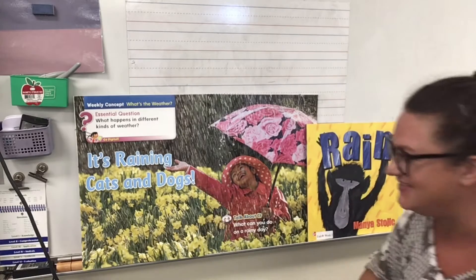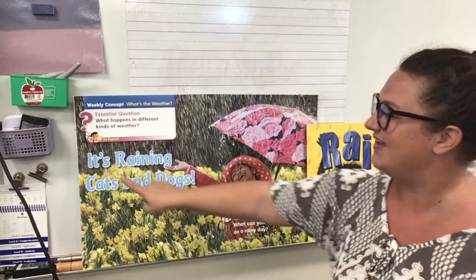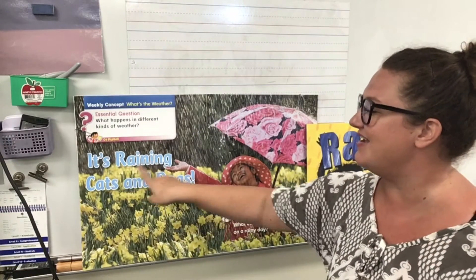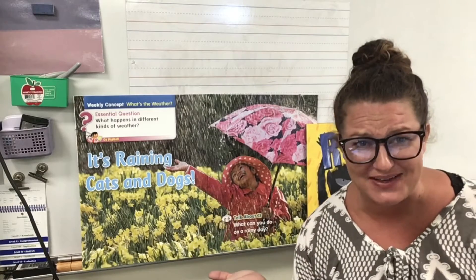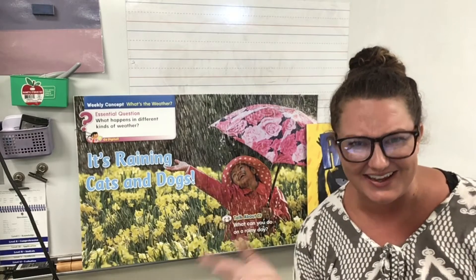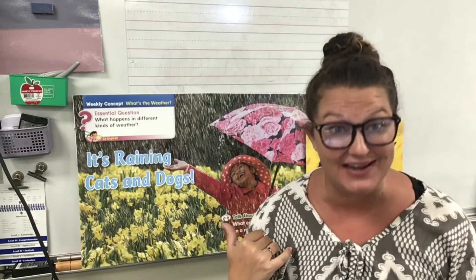Now let's read this sentence together: It's raining cats and dogs. I don't see any cats and dogs in that picture — that's silly. Can you imagine cats and dogs falling from the sky? As we can see from the picture, it's not actually raining cats and dogs. When we say that, we mean it's raining a lot.